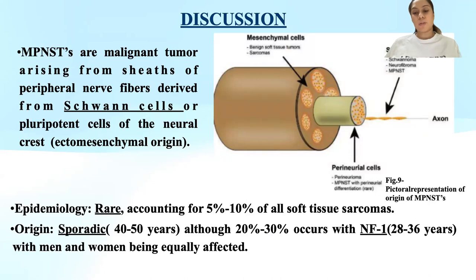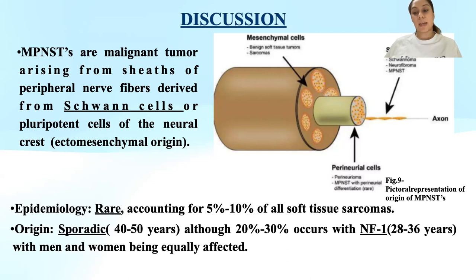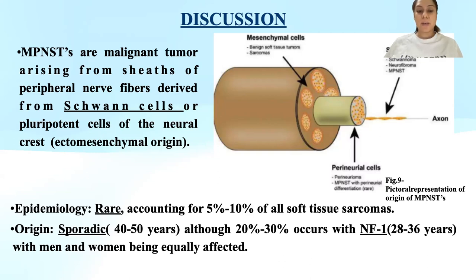The origin of these tumors is sporadic, seen in the 40 to 50 years age group, and also in neurofibromatosis type 1 patients, in whom the origin can be at an early age — from 28 to 36 years. Men and women are equally affected.